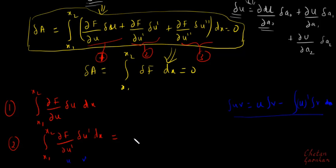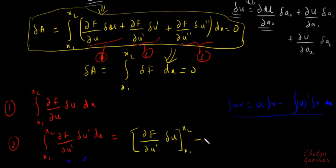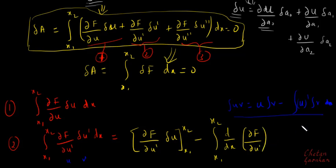Applying integration by parts to the second term: ∂f/∂u' times δu, evaluated from x1 to x2, minus the integral from x1 to x2 of d/dx(∂f/∂u') times δu dx. So our second term turns out to be this.